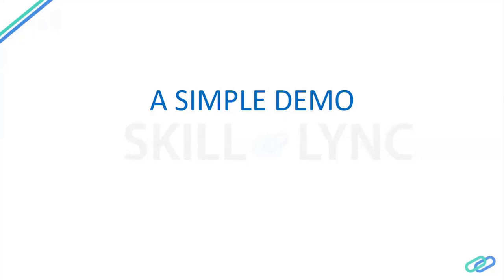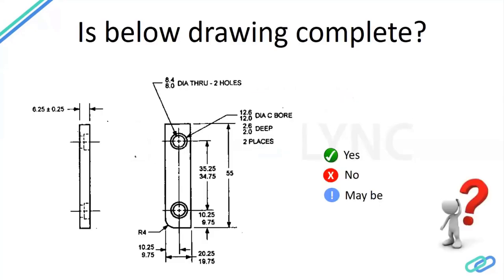The intent of GD&T and having a standard across the world is to make the communication process a standardized one. In today's world, engineering departments are divided across different countries — the designer, the quality inspector, and the manufacturer may all be in different parts of the world, creating a huge chance for miscommunication. This miscommunication can be reduced or completely eradicated through a standard method. The case study shown features a simple part of thickness 6.25 with a tolerance of plus or minus 0.25, having two counterbore holes on either end, a distance between the counterbore holes of 35 plus or minus 0.25, and an overall length of 55.